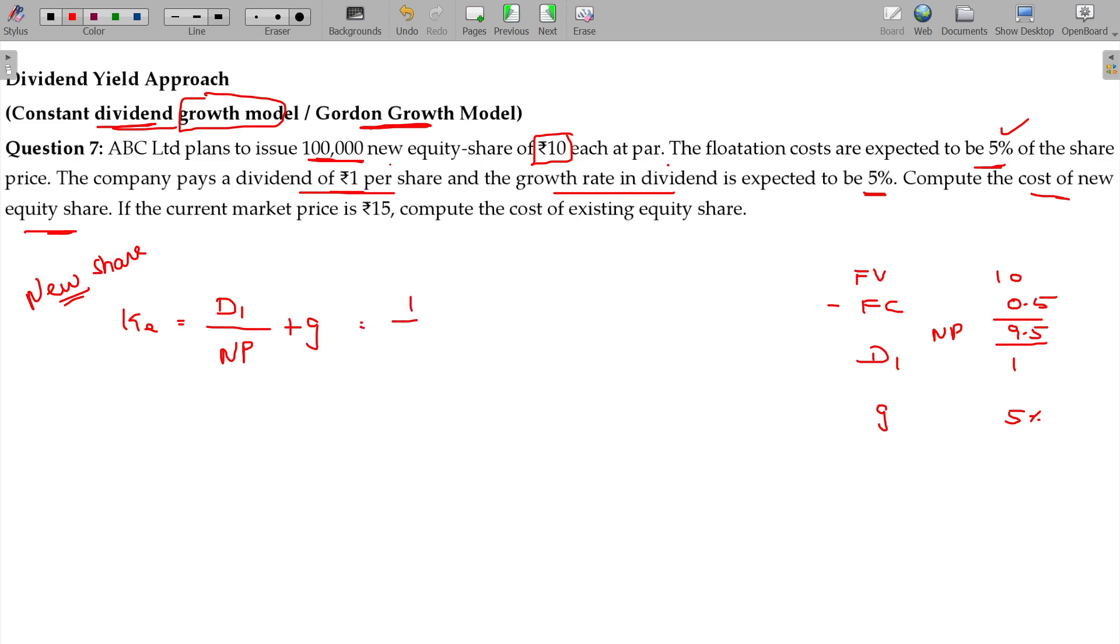I have to pay ₹1 every year onwards hereafter, and net proceeds being only ₹9.50, and of course we get 0.05 being the growth percentage. 1 by 9.5, put in a fraction, over the other 0.05, add that, then into 100.